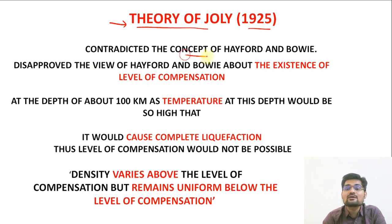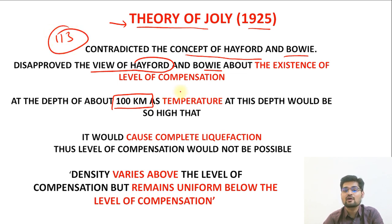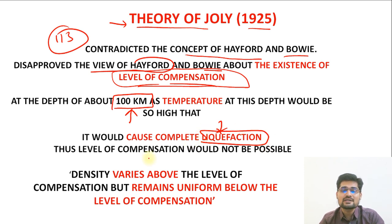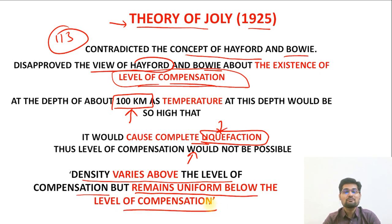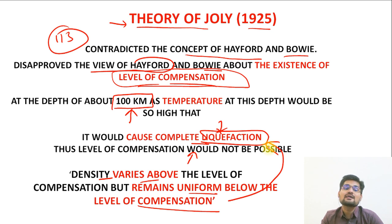Jolly's theory in 1925 contradicted Hayford and Bowie. Jolly argued that if you go 100 kilometers depth — as Hayford and Bowie claimed was the level of compensation at 113 kilometers — the temperature would be so high that the material would not remain solid but would be completely liquefied due to pressure and temperature. So density varies above the level of compensation, but remains uniform below it because of this liquefaction factor at depth.